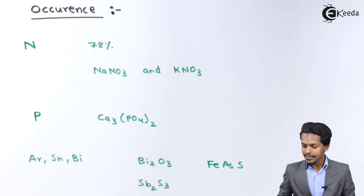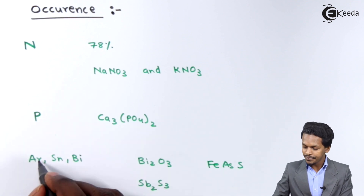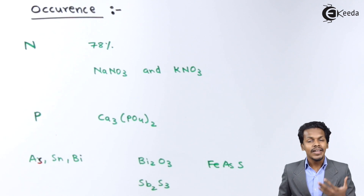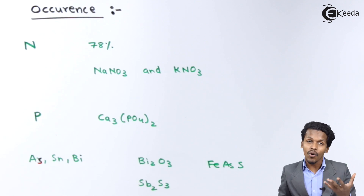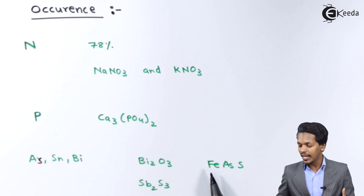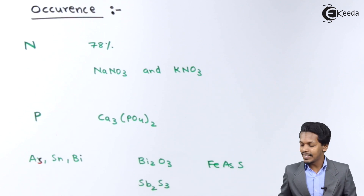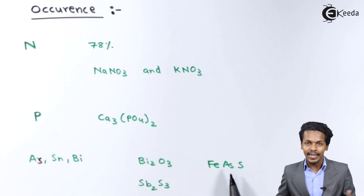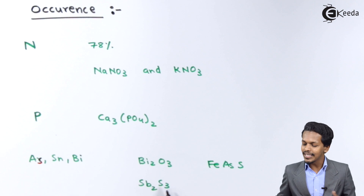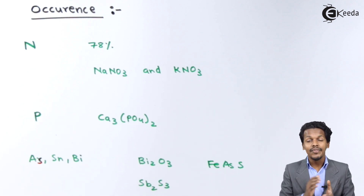Arsenic, Antimony, and Bismuth are found in the form of sulphide ores or oxide ores. Bismuth is present in the form of Bi2O3. Arsenic is present in the form of FeAs, known as Arsenopyrite. Antimony is present in the form of a sulphide, that is Sb2S3. So this was the occurrence of the group 15 elements.